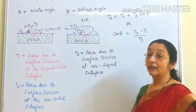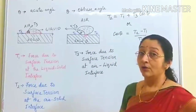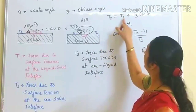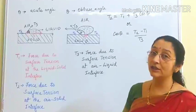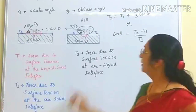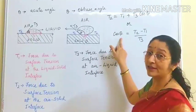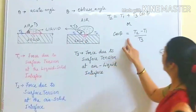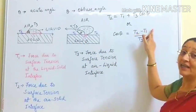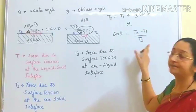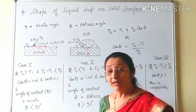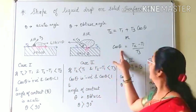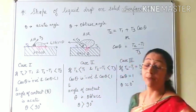The formula for the formation of the drop is: T2 = T1 + T3·cos θ. Rearranging, cos θ = (T2 − T1) / T3. Using this formula, we will now discuss different cases based on whether the angle of contact θ is zero, acute, or obtuse.